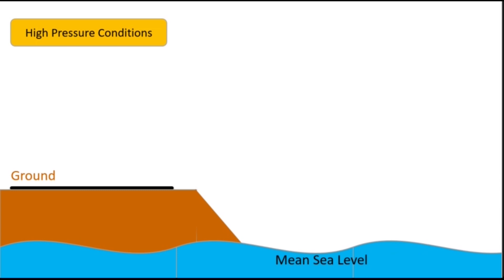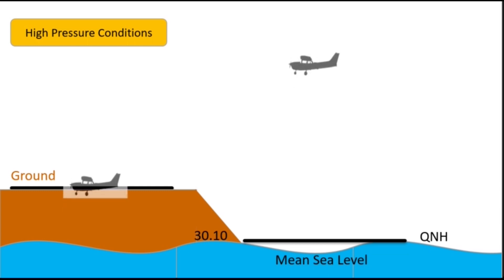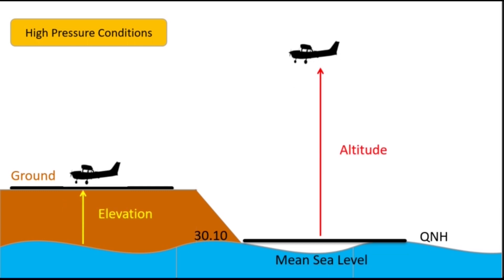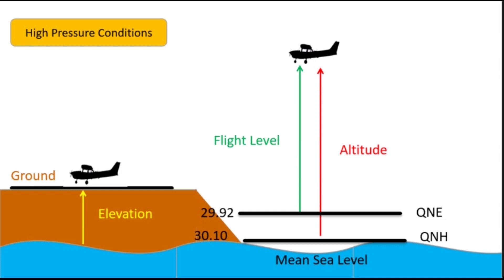What will happen in high pressure conditions? It means the barometric pressure at mean sea level will be higher than 29.92 inches of mercury. For example, if the pressure at mean sea level is 30.10 inches of mercury and the pilot feeds 30.10 as the barometric reference, it will give altitude in air and elevation of that airfield on the ground. Since the isobar of 29.92 inches of mercury will be higher than mean sea level in this condition, flight level will be lower than altitude.